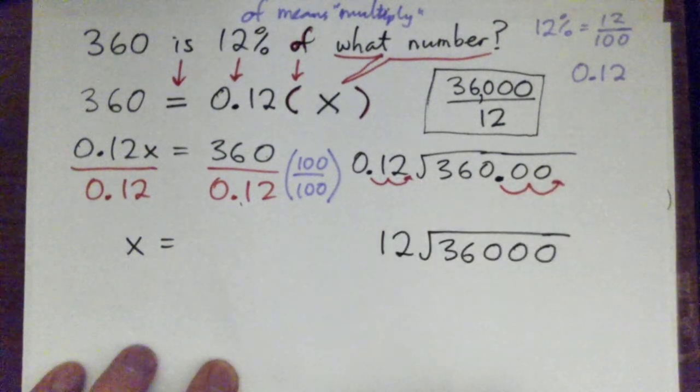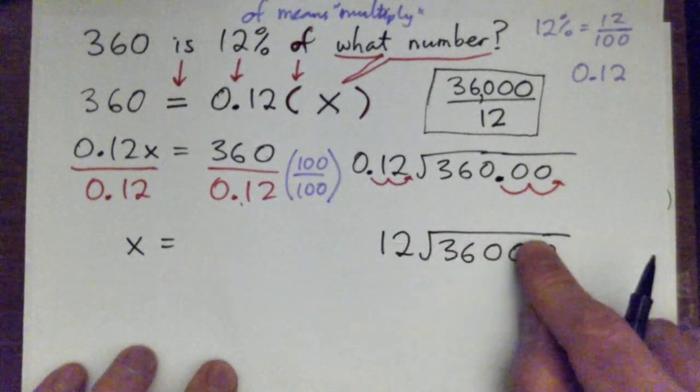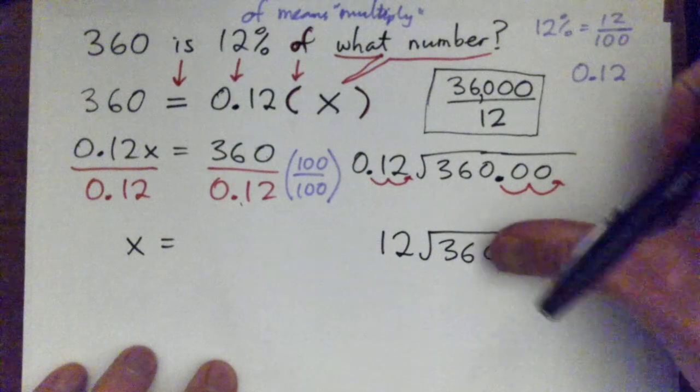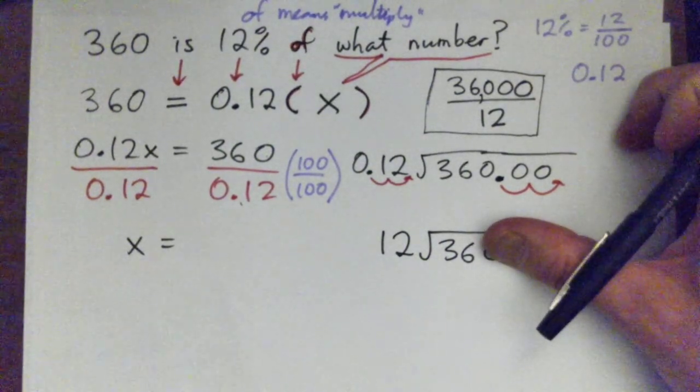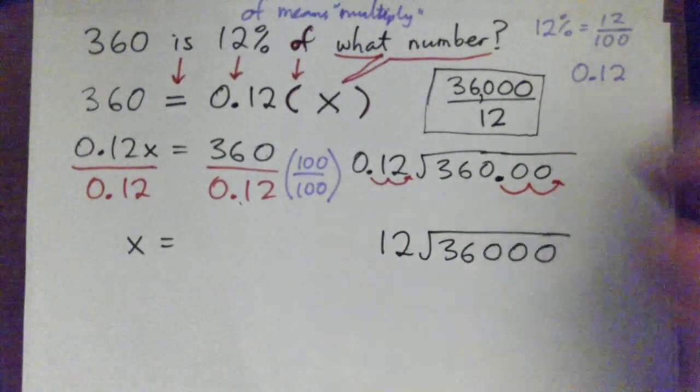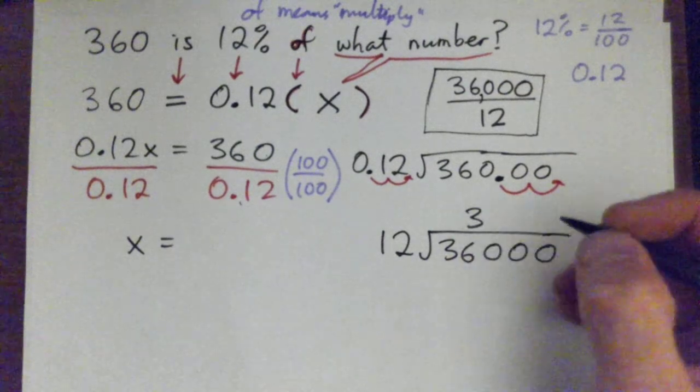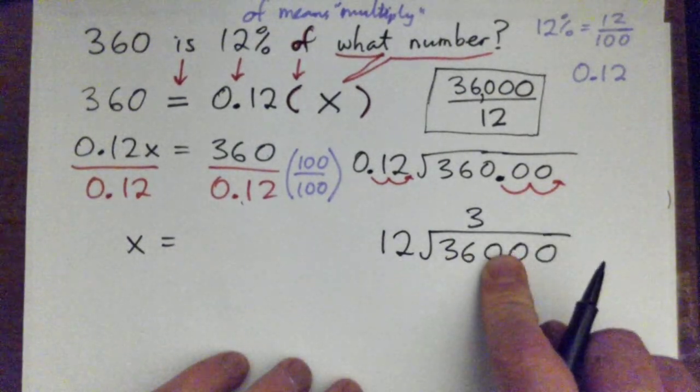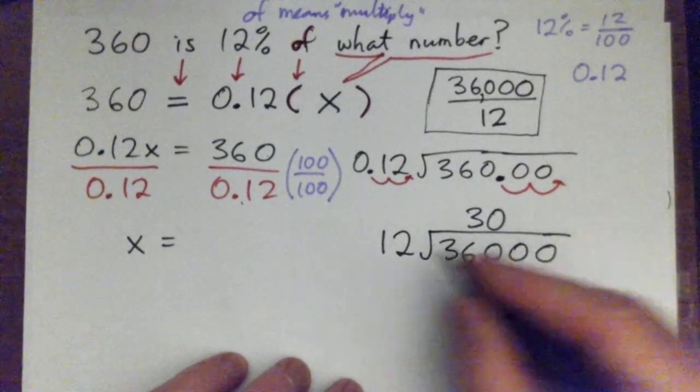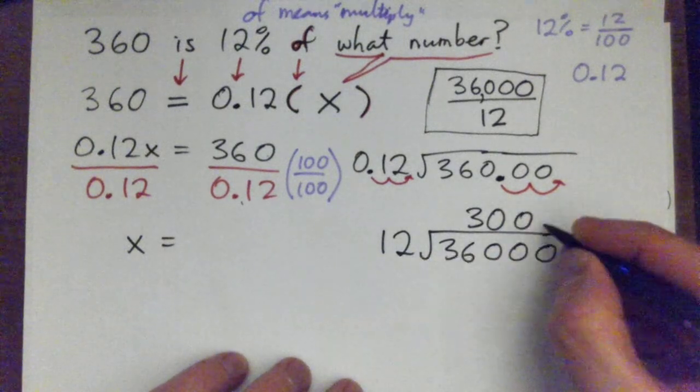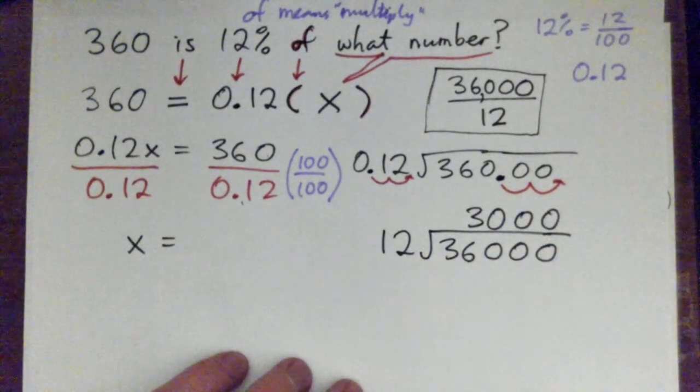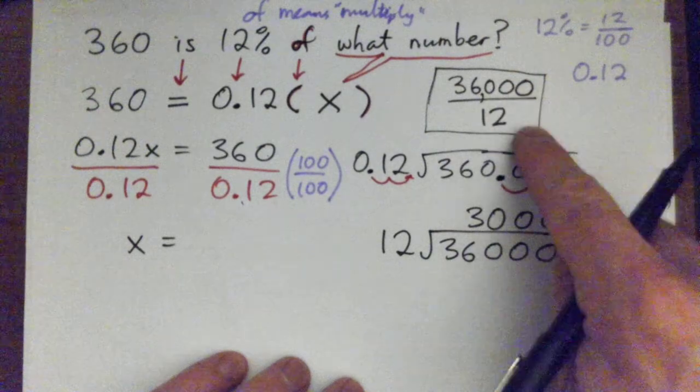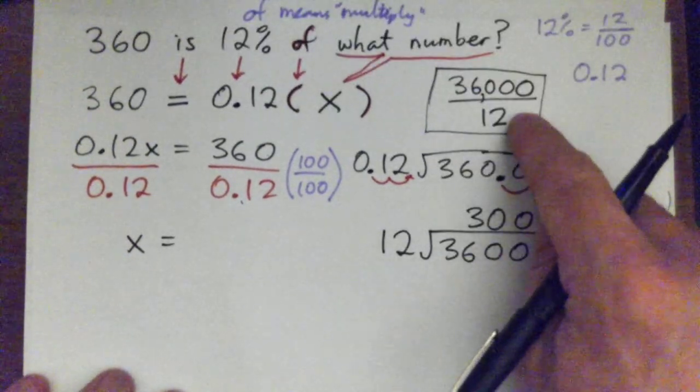So anycase, it's 12 into 36,000. So what's 12 into 36? Three, lovely. And 12 into 0? Zero. 12 into 0? Zero. 12 into 0? Zero. Or you could have written it this way: 36,000 over 12 is just 3,000.